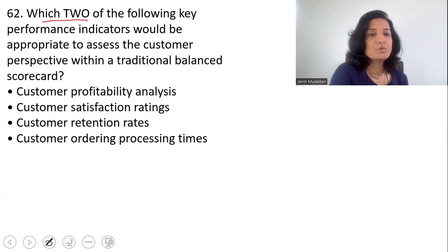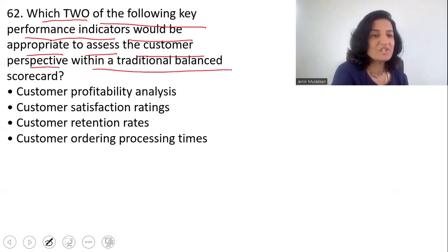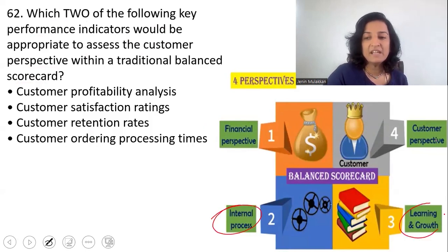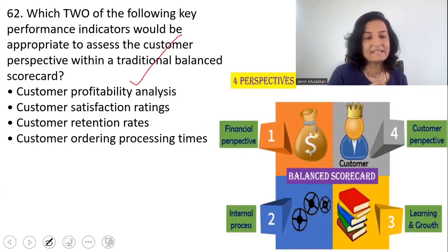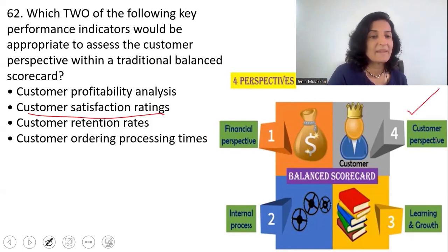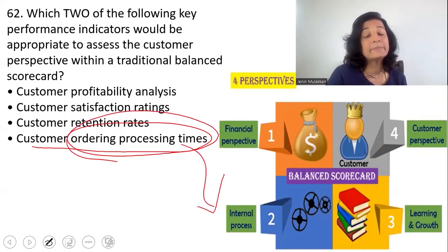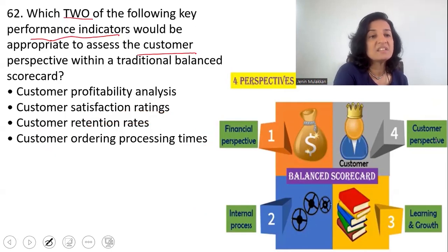Moving to question 62: which two of the following key performance indicators would be appropriate to assess the customer perspective within a traditional balanced scorecard? The four perspectives are financial, internal process, learning and growth, and customer. Customer profitability analysis relates to dollar terms — that's financial. Customer satisfaction rating and customer retention rates both belong to the customer perspective. Customer ordering processing times relate to internal business process. So the two KPIs under the customer perspective are customer satisfaction ratings and customer retention rates.